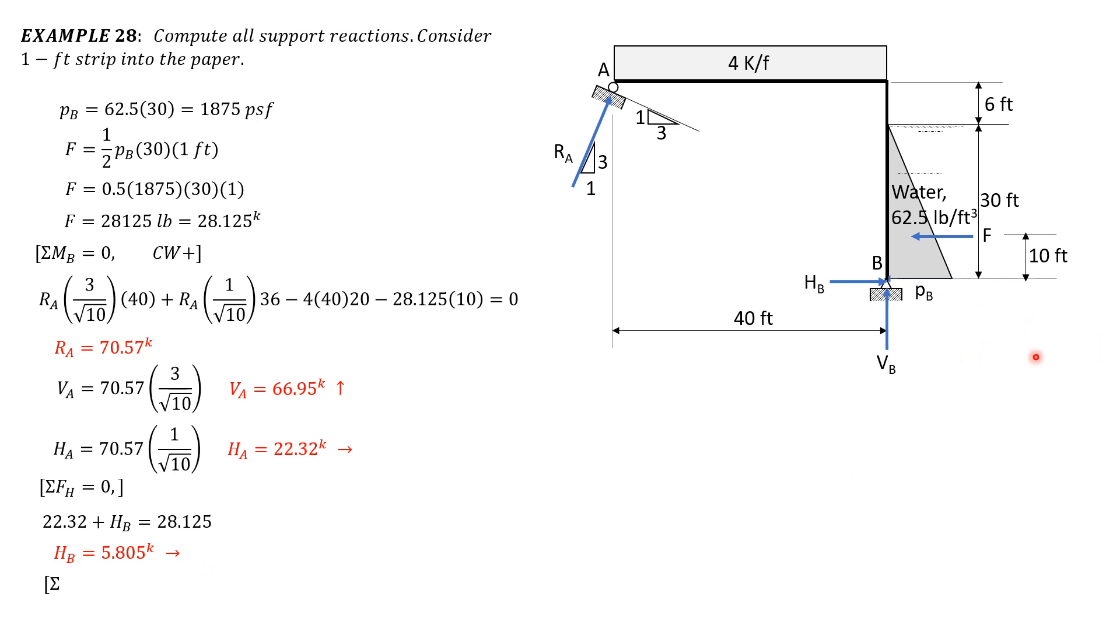So the remaining component is the vertical reaction at B. Summation vertical equals 0. So we have 66.95, the vertical component of reaction at A plus VB, then minus 4 times 40. Then equals 0. So vertical reaction at B equals 93.05 kips upward.